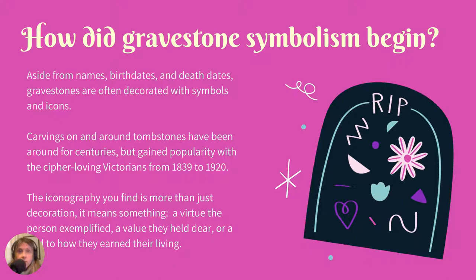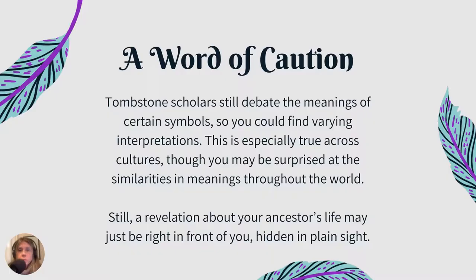How did gravestone symbolism begin? This practice has been around for millennia — the Egyptians were doing it. But for our purposes, if you're researching in America or Europe, the practice really became very popular with those cipher-loving Victorians. They loved a good hidden meaning and they loved symbolism. It's important to think that a person wanted this on their tombstone for a reason, or their family wanted it — maybe a virtue the person exemplified, a value they held close, or a nod to how they earned their living.